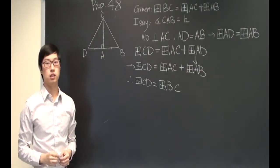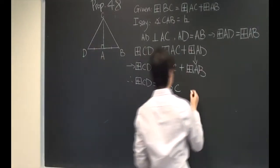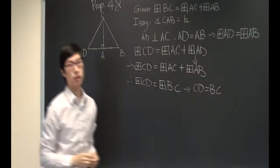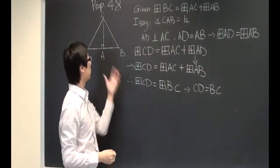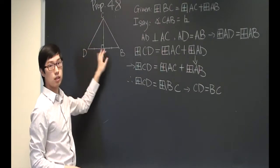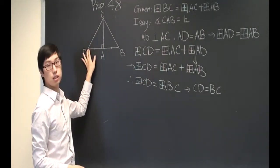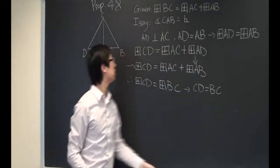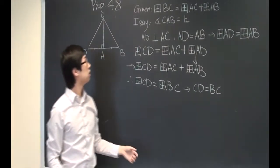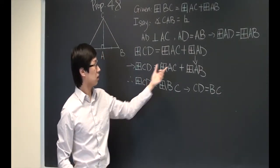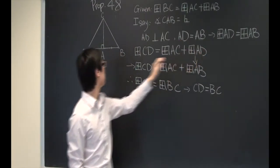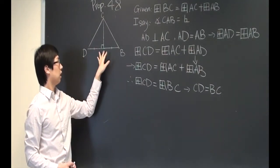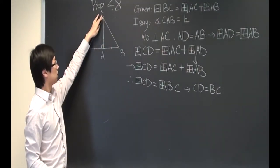Therefore, line CD is equal to line BC. Let's look at triangle CAB and CAD. We got CD is equal to BC, and also constructed AD is equal to AB, and they have a shared line AC.